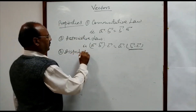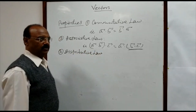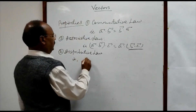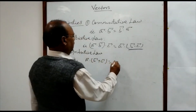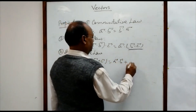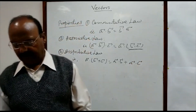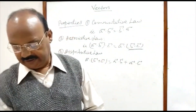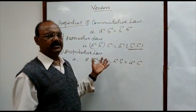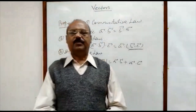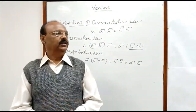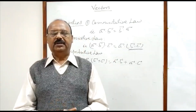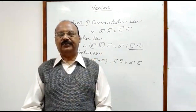Third is the distributive law. The dot product of vectors is distributive with respect to addition: a dot (b plus c) equals a dot b plus a dot c. These are the basic concepts of scalar product or dot product of vectors. I hope you understood them well. In the next video we will see some problems related to dot product of vectors. Thank you very much for watching.